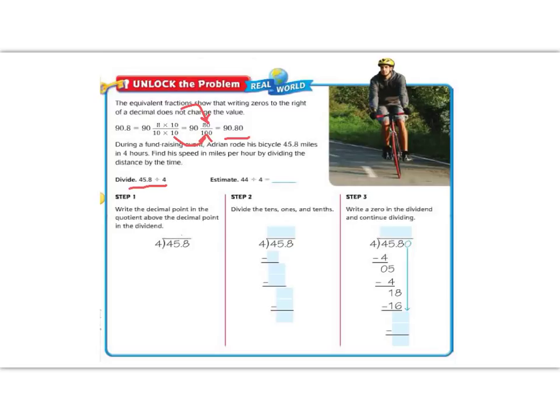First, let's estimate. We're going to round 45.8 to 44, because it's close to 45, but also divisible by 4 with nice easy mental math. 4 goes into 44 11 times. So our answer is going to be around 11.